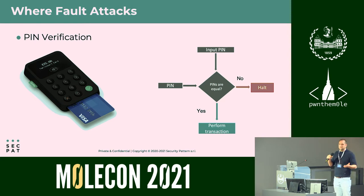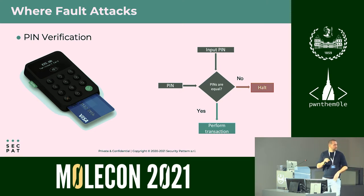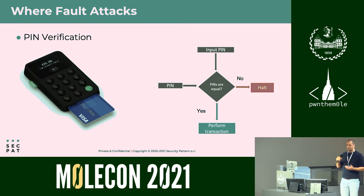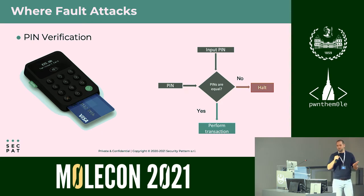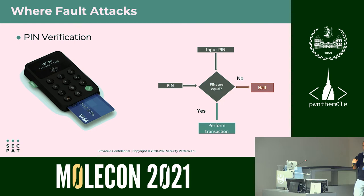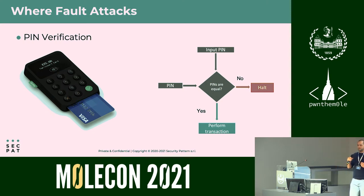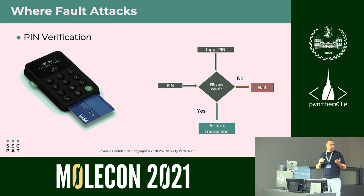Now everybody can build a small tool to try using faults. Where can fault attacks be used? Basically, on the smart card side, there's one main place where faults can be used. When you use your smart card to make a transaction, you insert your PIN to verify you are the owner of the card. The flowchart shows that if you insert the right PIN, the card compares the PIN inserted with its own PIN, and if they are equal, the transaction is performed. If not, the transaction is halted.